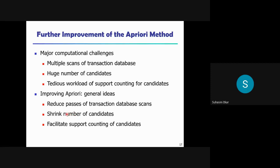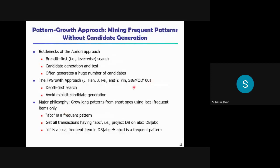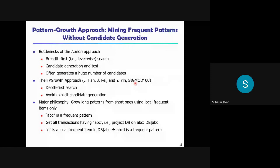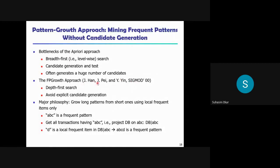In the year 2000, a very different approach for frequent pattern management was introduced, called the Frequent Pattern Growth approach — FP Growth. It was proposed by Jiawei Han, Jian Pei, and Yiwen Yin, who published a research paper on the FP Growth algorithm with results far better than the Apriori algorithm.